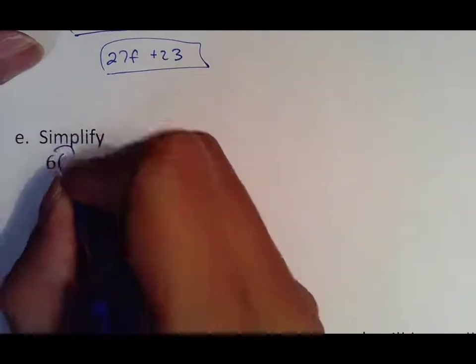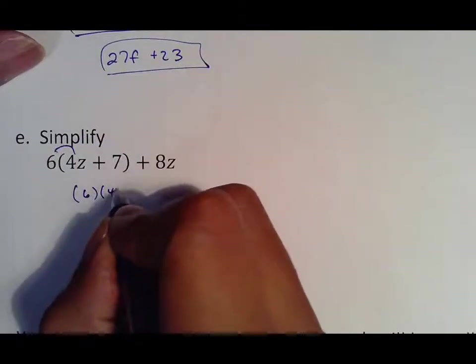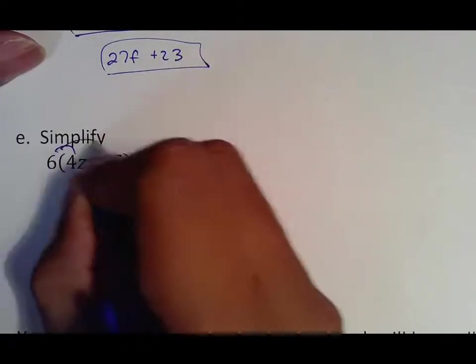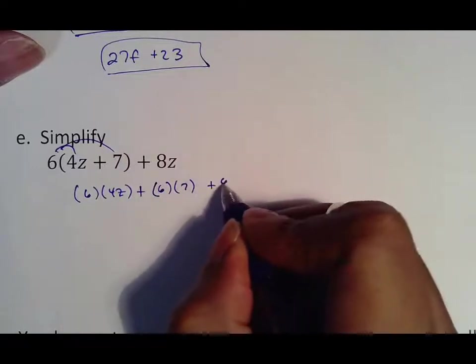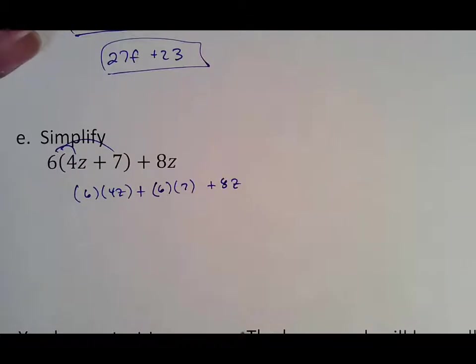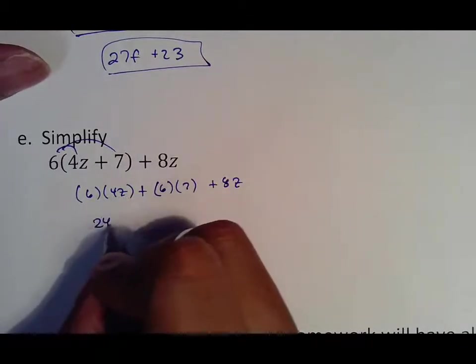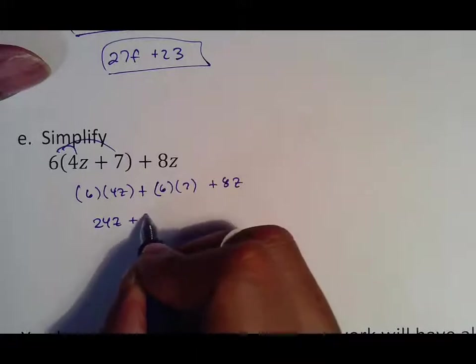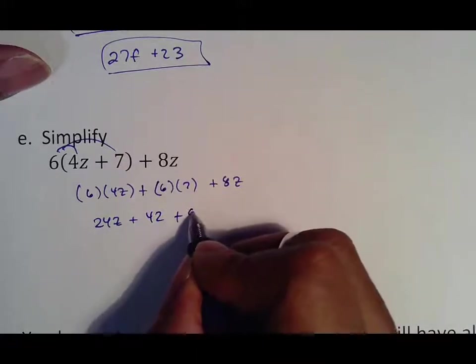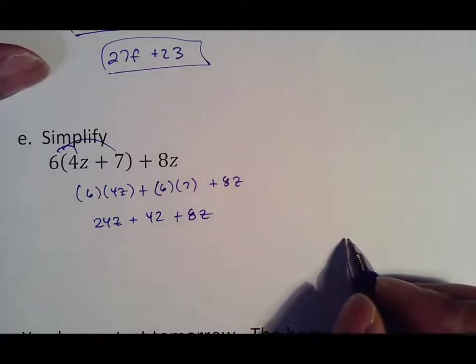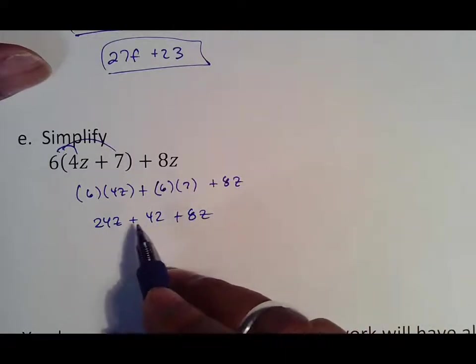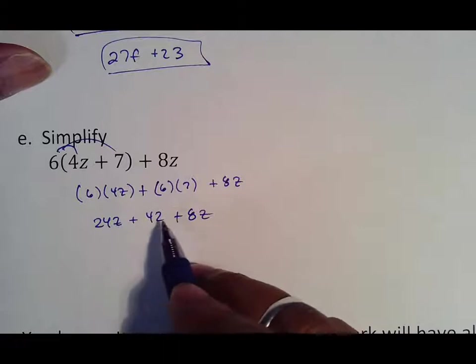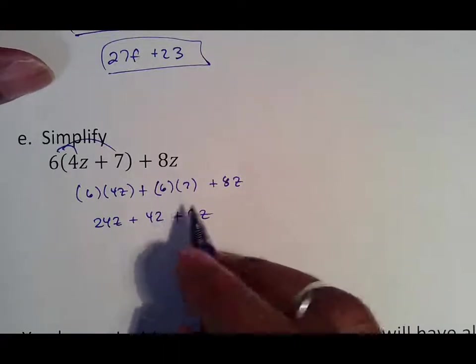So here, 6 is going to meet 4z. And 6 is going to meet 7. The 8z has nothing to do with anything because it's not in the parentheses. 6 times 4z makes 24z. 6 times 7 makes 42. Notice that's why I actually draw my lines. Otherwise, that would look like a 2. So whenever I draw my z's, I put a line in them because that would be confusing.